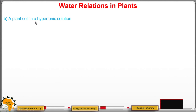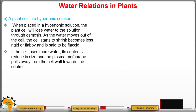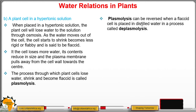What happens if we place a plant cell in a hypertonic solution, such as a salt or sugar solution? When placed in a hypertonic solution, the plant cell will lose water to the solution through osmosis. As water moves out, the cell starts to shrink, becomes less rigid or flaccid. If the cell loses more water, its contents reduce in size and the plasma membrane pulls away from the cell wall toward the center. The process through which plant cells lose water, shrink, and become flaccid is called plasmolysis.